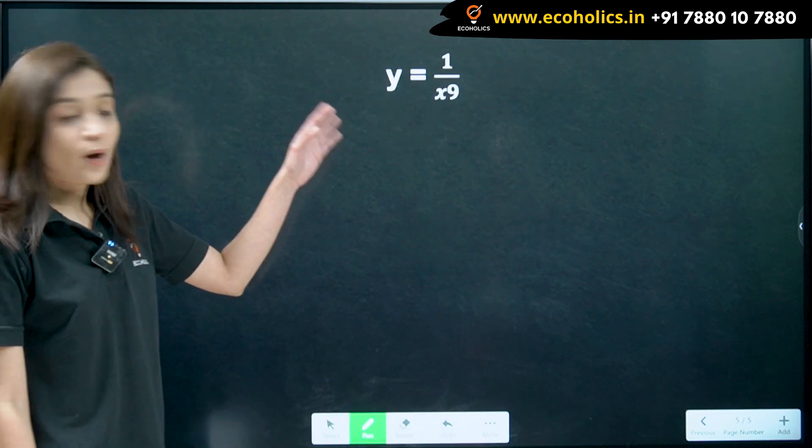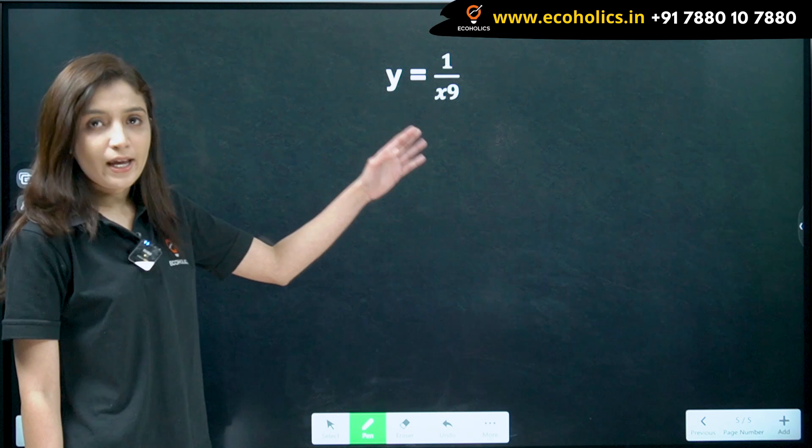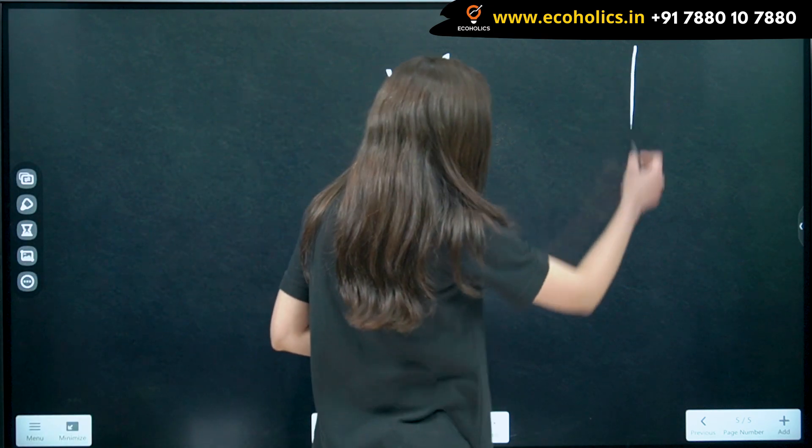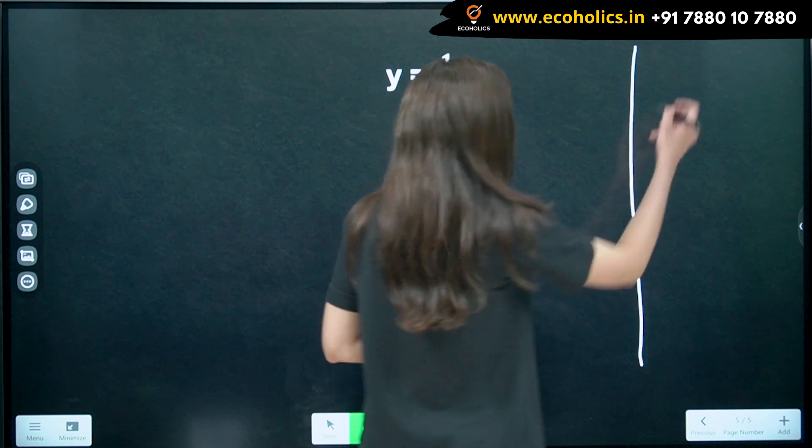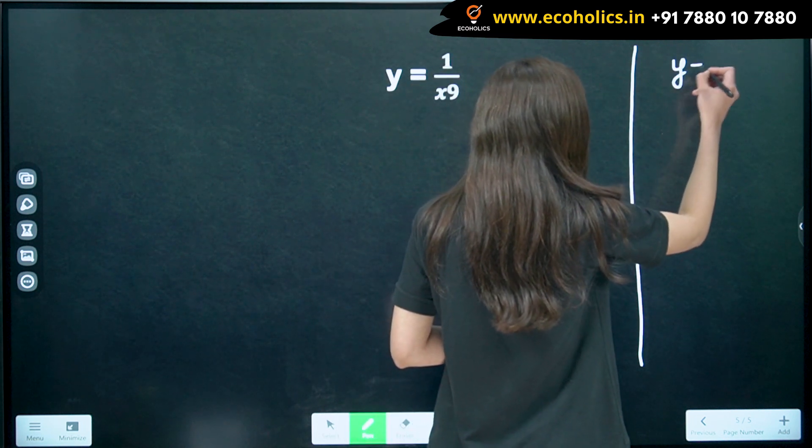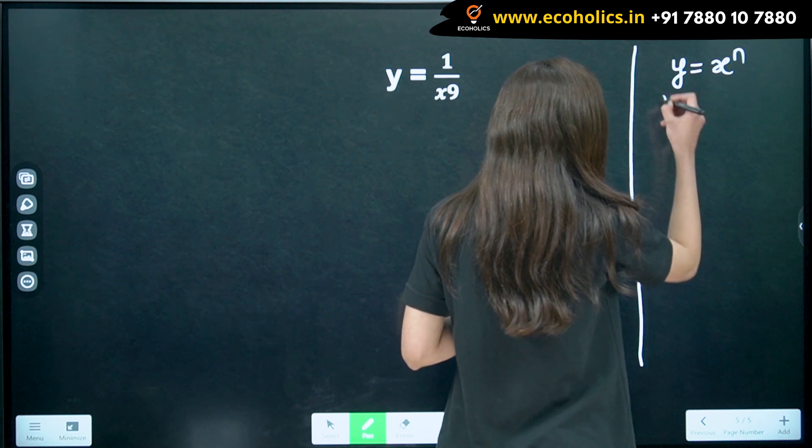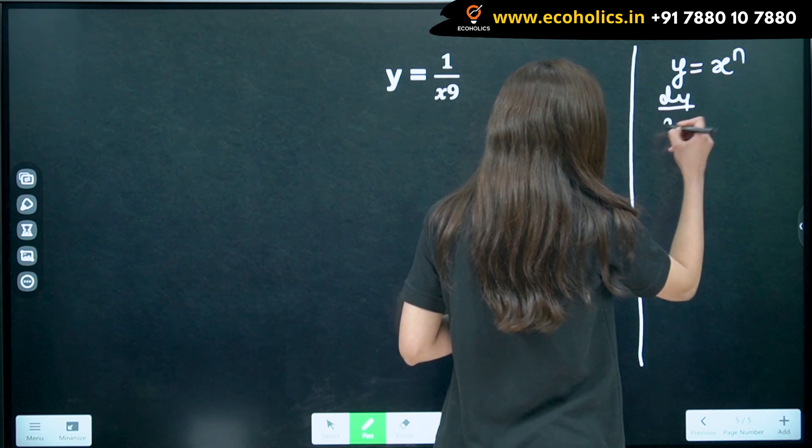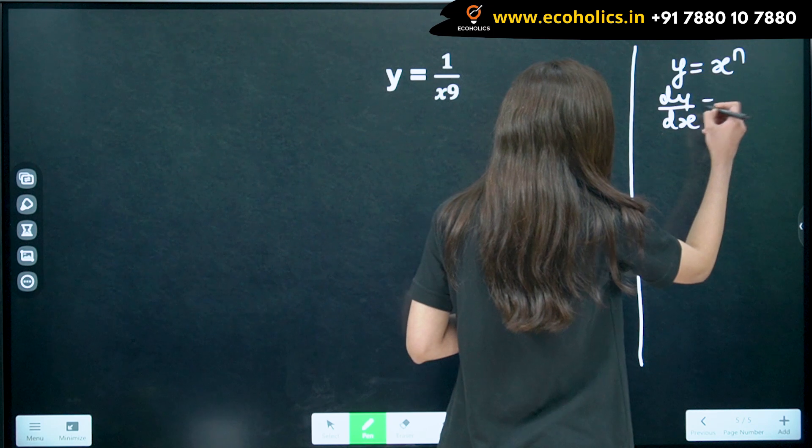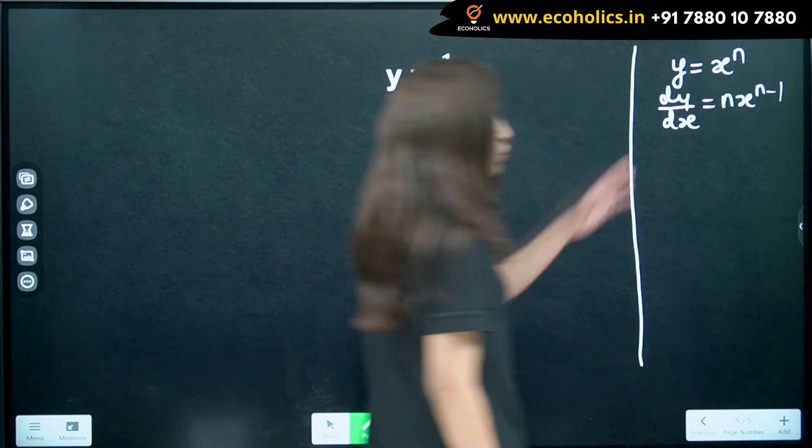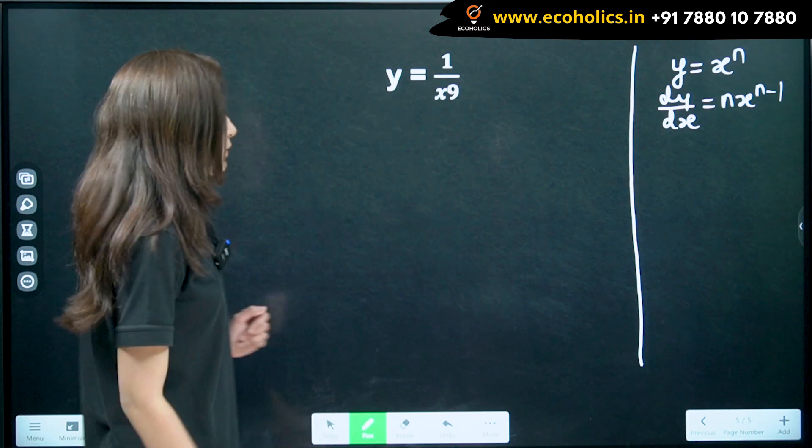So, we have y is equal to 1 by x raised to 9. Now, here also, using the same formula, that is, it is also in the form of this. So, using this, let's calculate this.